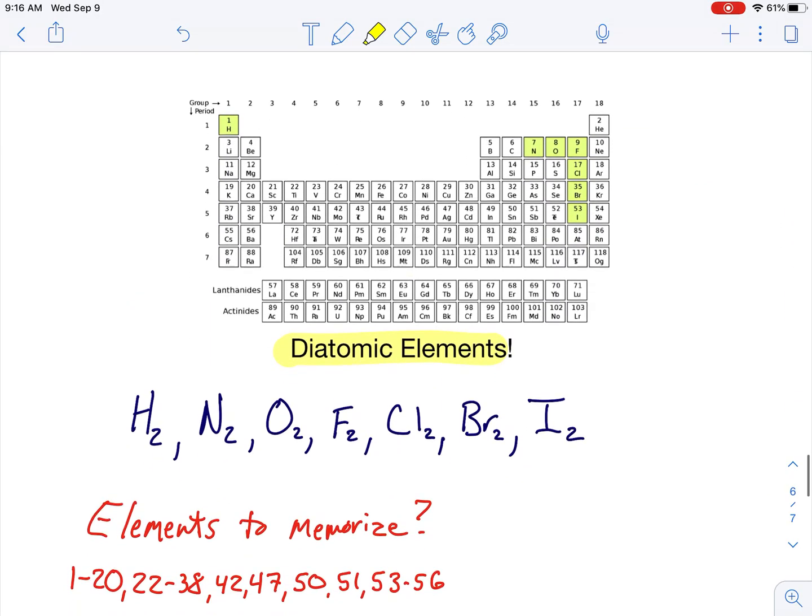The last thing we have to learn about today are these things called diatomic elements. Here, I have a periodic table. And I've highlighted the diatomic elements in green. Hydrogen, nitrogen, oxygen, fluorine, chlorine, bromine, and iodine. There are seven of them. An easy way to memorize them is to look at the periodic table and realize that there's a 7 right here. And that 7 identifies 6 of the 7 diatomic elements.